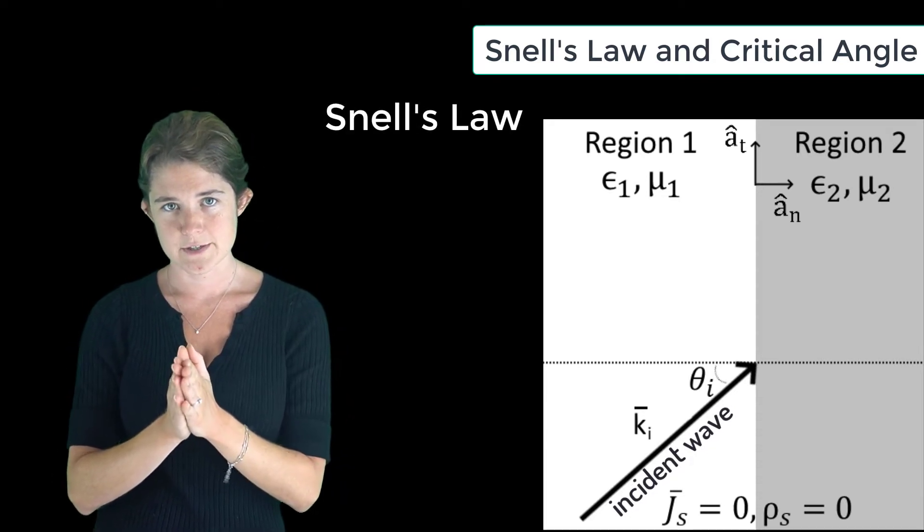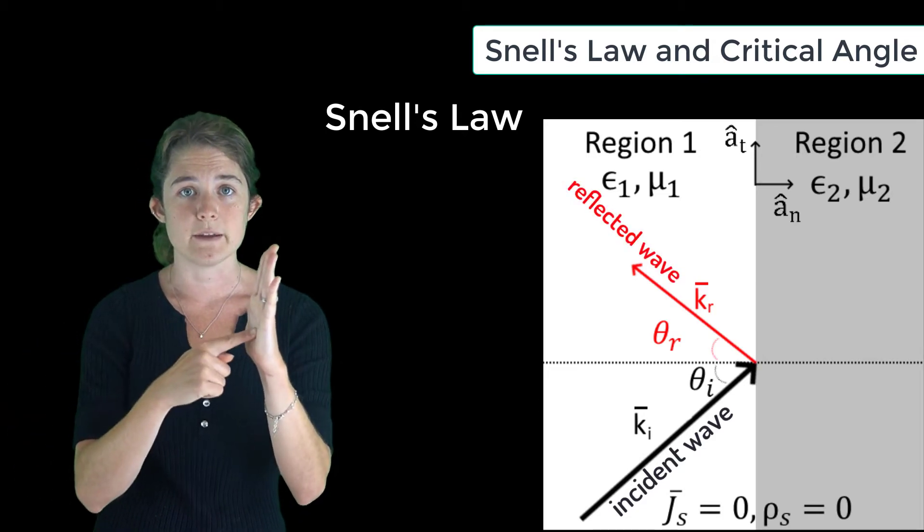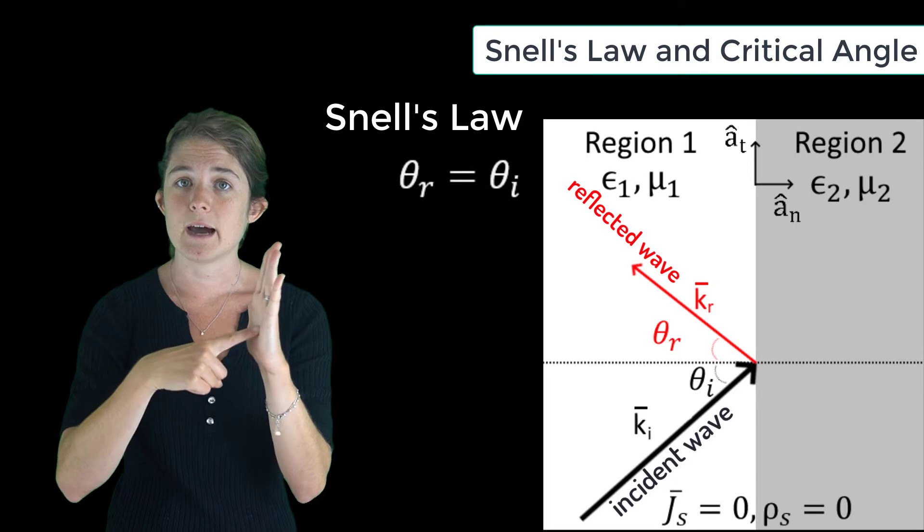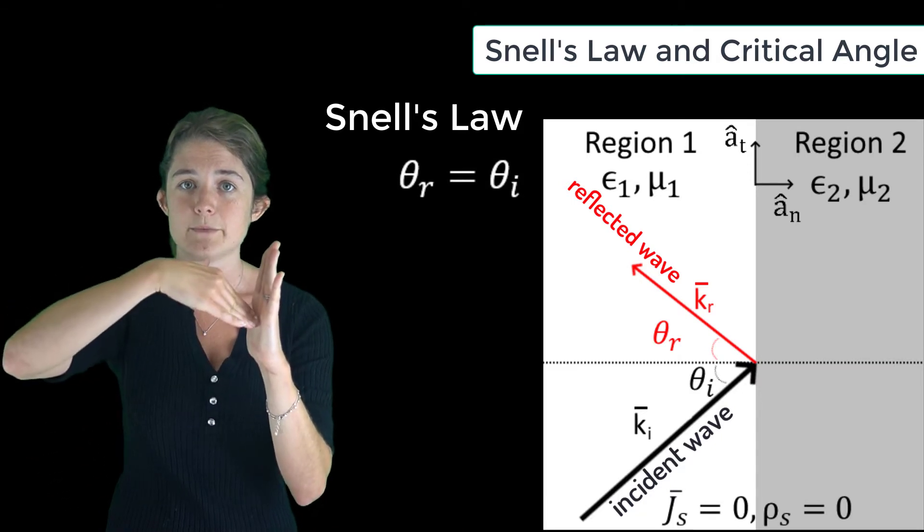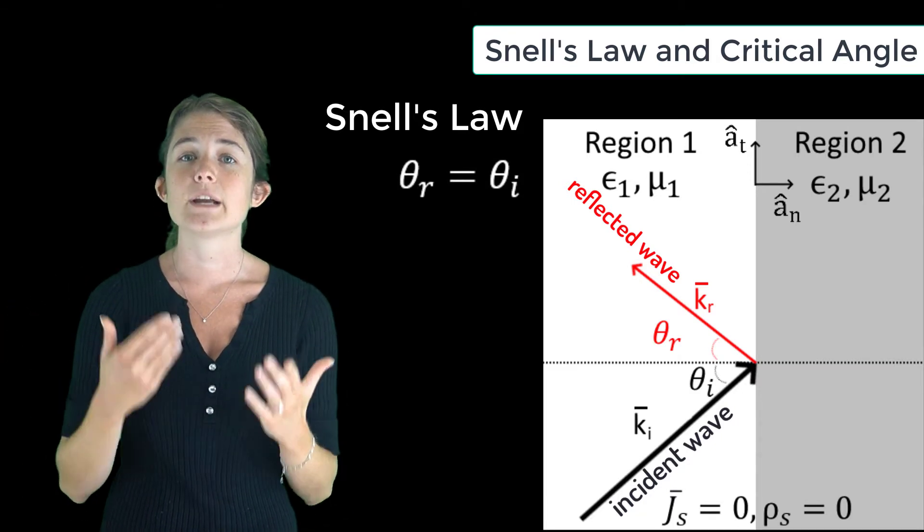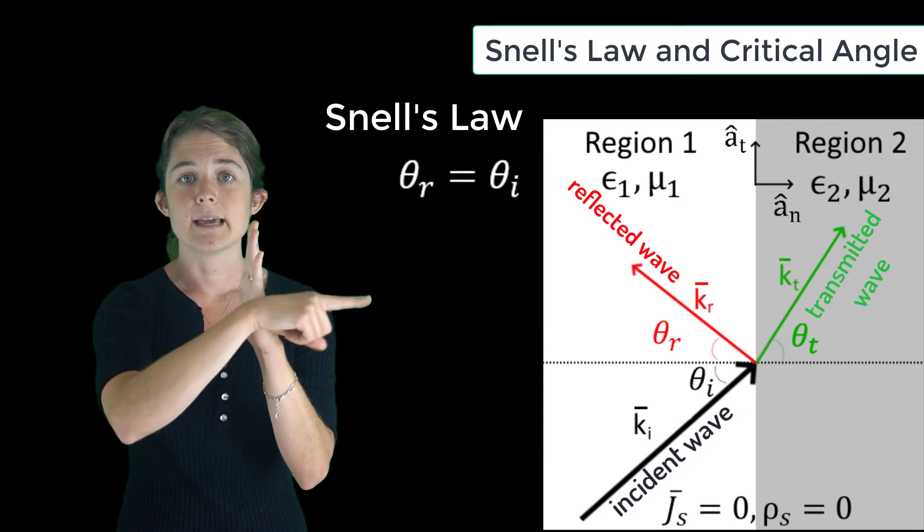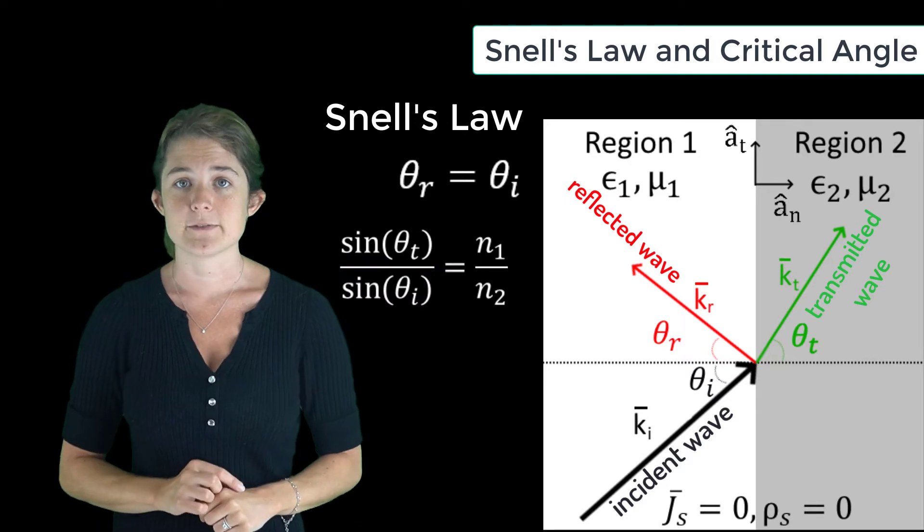Snell's law has two parts. Firstly, the reflected wave will propagate at an angle theta R that is equal to theta I but measured on the opposite side of the normal. Secondly, the transmitted wave will also be on the opposite side of the normal from the incident, and its angle will be given by this ratio of sines.